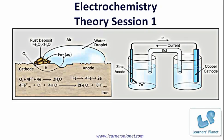When electric current is passed into some chemical systems, chemical reactions take place there. And there are systems where chemical reactions produce electric current. For example, this is a picture of an electrochemical cell. In this case, redox reactions are taking place and due to the redox reactions, the current is produced.